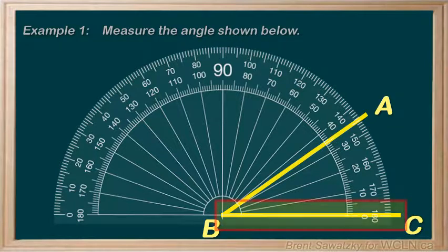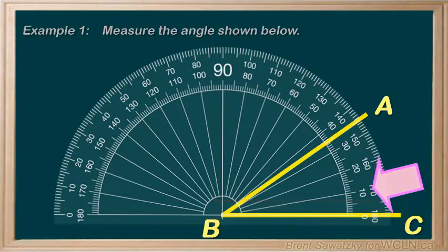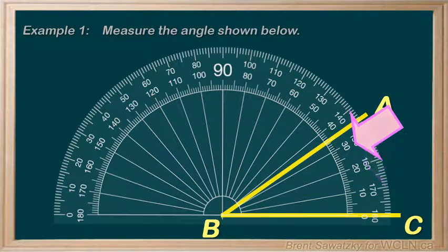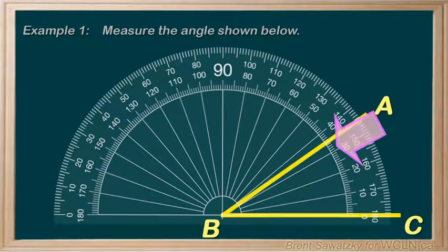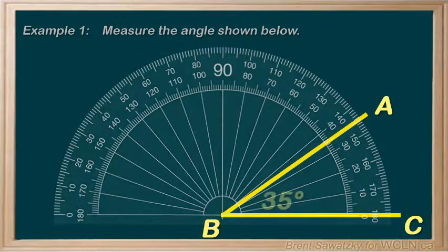In our case, this will count as our zero line. And we go from there 10, 20, 30, and then we count the small increments, 5. And so we have an angle of 30 plus 5 or 35 degrees.